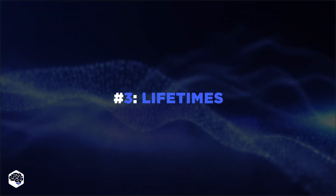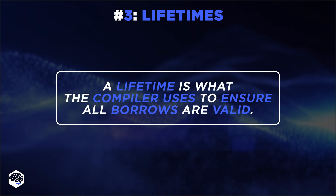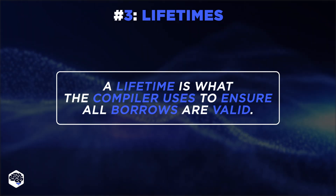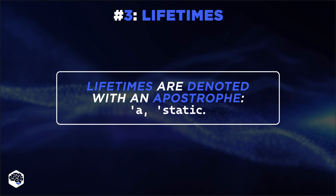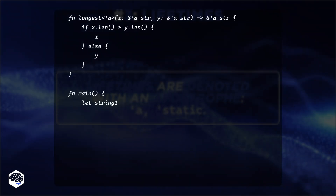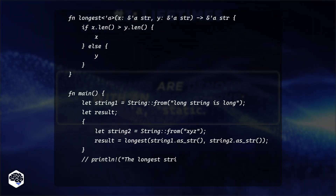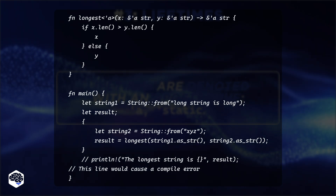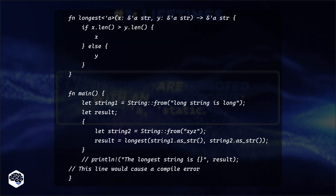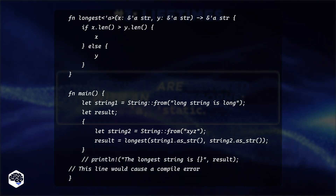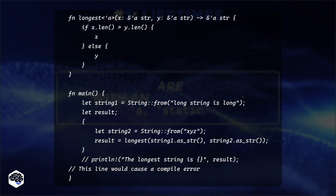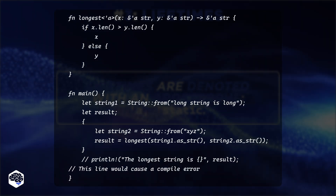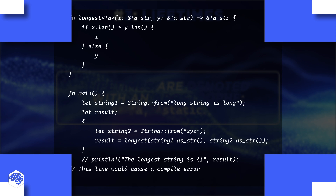Number three on our Rust list is lifetimes. In Rust, there's a way of ensuring that references are valid for as long as they are needed, enforcing constraints and preventing issues like use-after-free errors. This example demonstrates the longest function, which returns a reference to the longer of two string slices. The nested scope in main causes one of the references to become invalid after the scope ends, leading to a potential compile-time error — demonstrating Rust's safety mechanism in managing lifetimes and preventing dangling references.